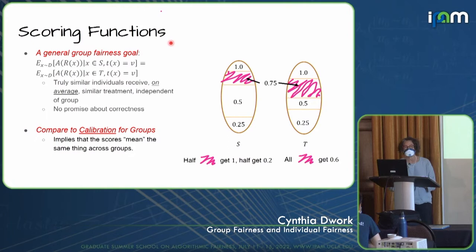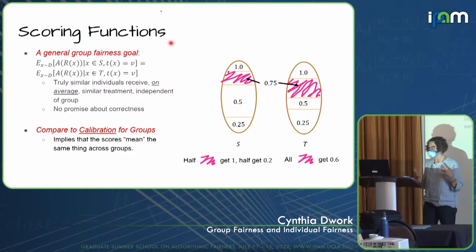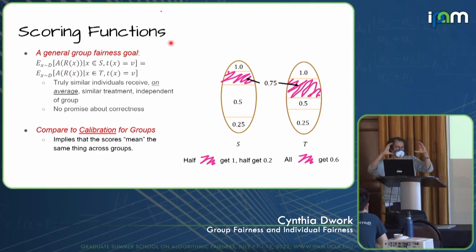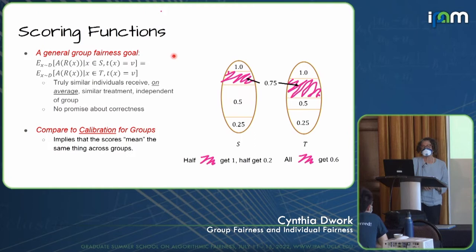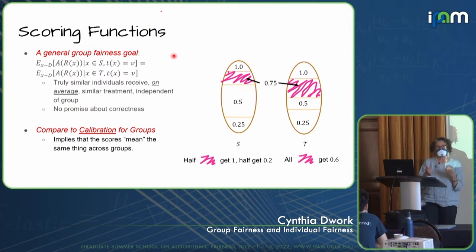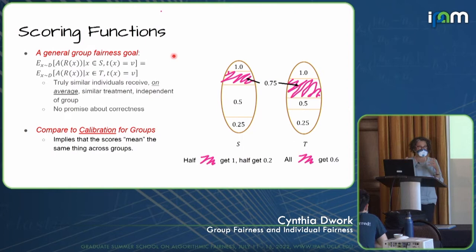Suppose that everybody really does have an inner truth — bracketing the idea that we don't know what an individual probability actually means, but just suppose for a moment that we did, and each person has a truth. The truth for individual x is denoted v. T of x is v. A general group fairness goal might be that if we look at the people in S whose truth is v for some particular value v, and then we look at people in T whose truth is also v for this same value, then on average we would want them to get the same score from our algorithm. That's a general group fairness goal.